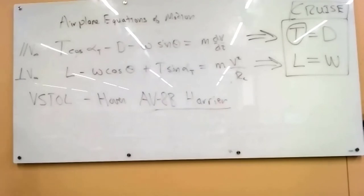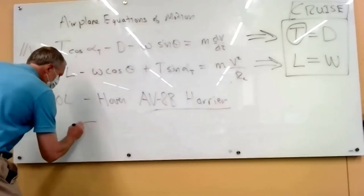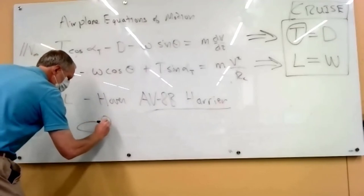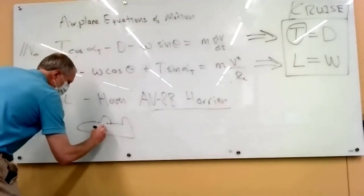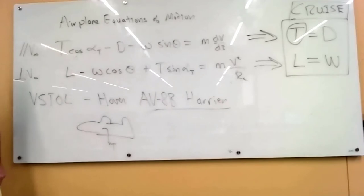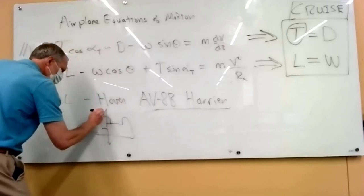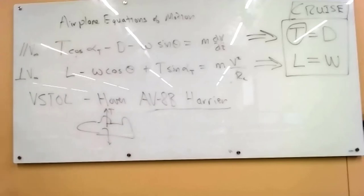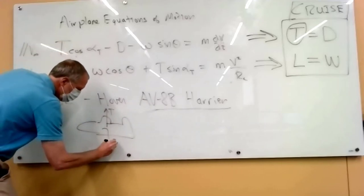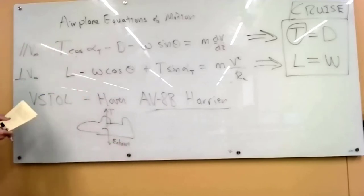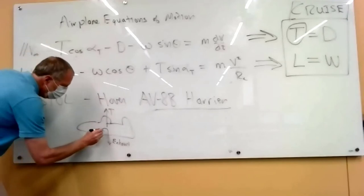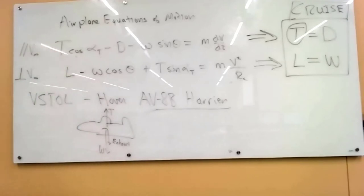This is like the AV-8B or the Harrier. What this airplane has is a set of nozzles that can direct the thrust directly downward. They can also direct it backward for normal flight, but it can hover because the engine thrust gets turned and pointed down. The air flow goes down like that, so the thrust vector is up. So this is air flow, exhaust. So that creates a thrust up.